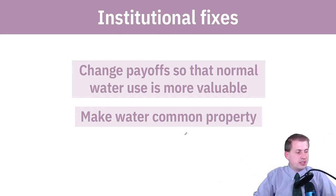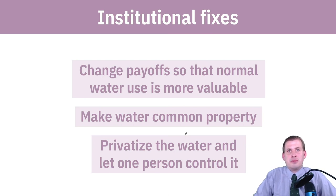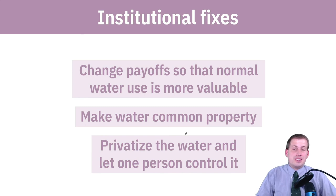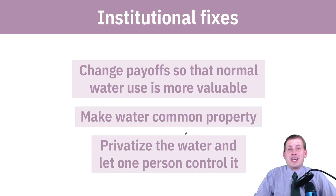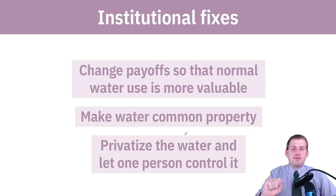Another solution is privatizing the water and letting one person control it. They could sell access or manage it themselves — they won't want to deplete it because they want to keep it. That fixes some overuse issues but not access issues, since one person ends up with all the resources.